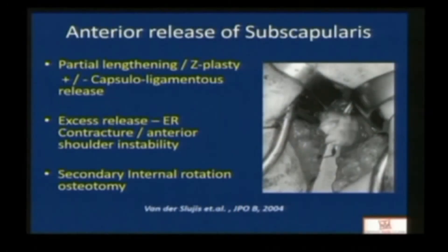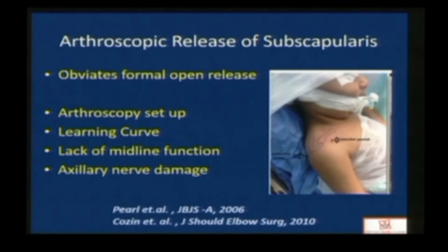Anterior release includes partial lengthening or Z-plasty with or without capsular ligamentous release, but excess release has been reported to cause external rotation contracture and anterior shoulder instability in some cases, and some of those patients require secondary internal rotation osteotomy. Arthroscopic release obviates formal open release, but it needs an arthroscopic setup and a good learning curve. Many patients are reported to have lack of midline function, and axillary nerve damage is a serious complication reported in this series.